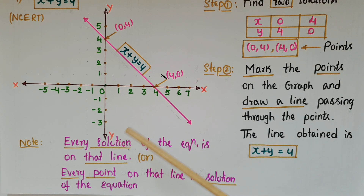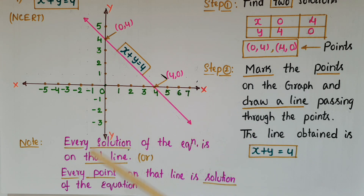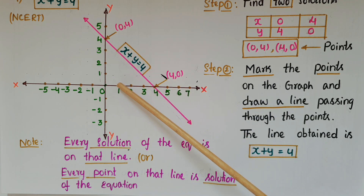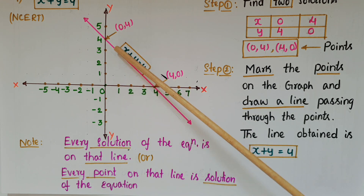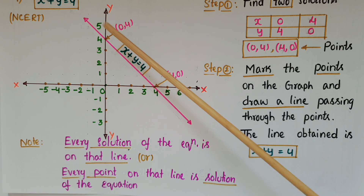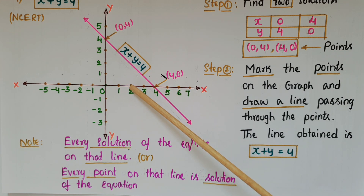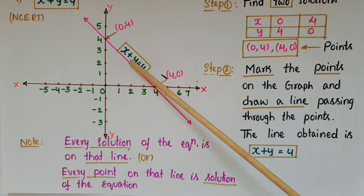Every solution of the equation is on that line, and every point on that line is a solution of the equation. For example, if you take (1, 3) — see here, this is 1 comma 3 — this is a solution because 1 plus 3 is equal to 4. If you take (2, 2), this is also a solution.